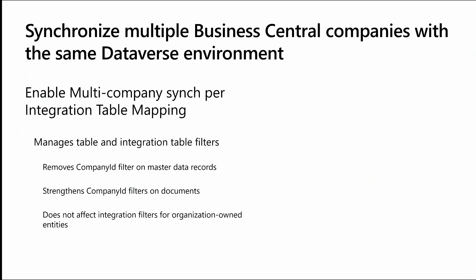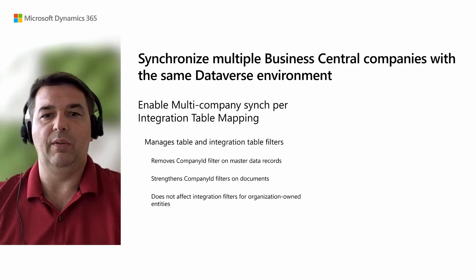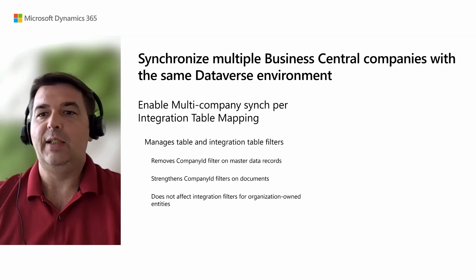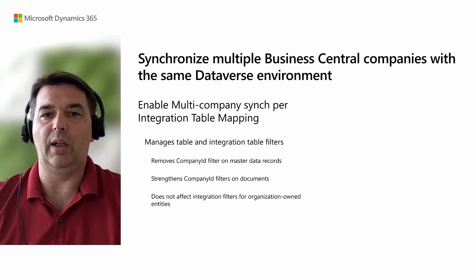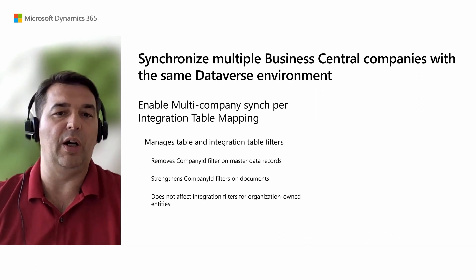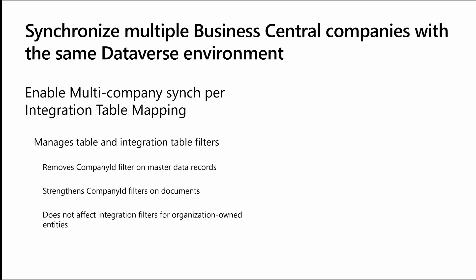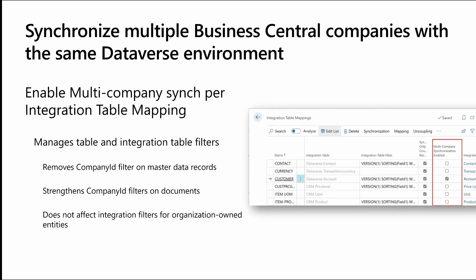With 2023 Release Wave 2, you can now unlock scenarios where multiple companies from multiple Business Central environments must access data in the same Dataverse environment. This enables partners to build new experiences when working in more than one company environment or base currency. When you enable multi-company synchronization, you get warned of the changes that will happen to integration filters and some recommendations for selected integration table mappings.